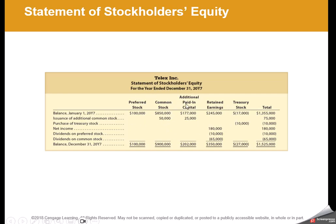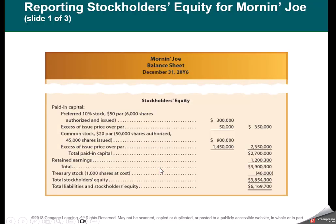The statement of stockholders' equity shows all categories — preferred stock, common stock, paid-in capital, retained earnings, and treasury stock — along with the types of changes that produced the ending balances, breaking out all the details of equity. The stockholders' equity section of the balance sheet lists preferred stock plus paid-in capital on preferred, common stock plus paid-in capital in excess of par, retained earnings, less treasury stock, to give us the total stockholders' equity.